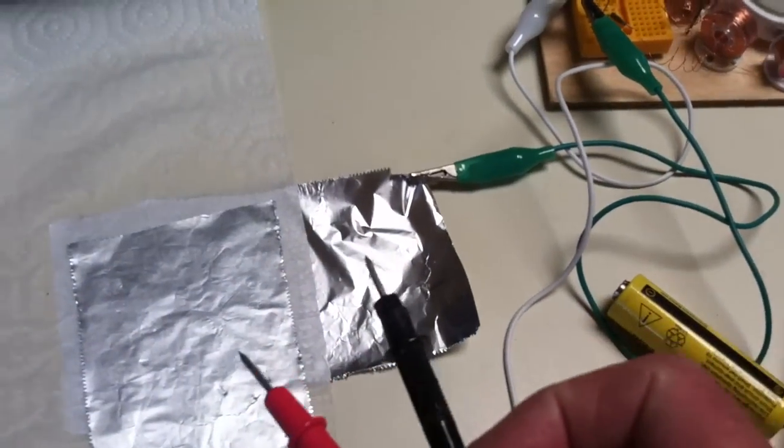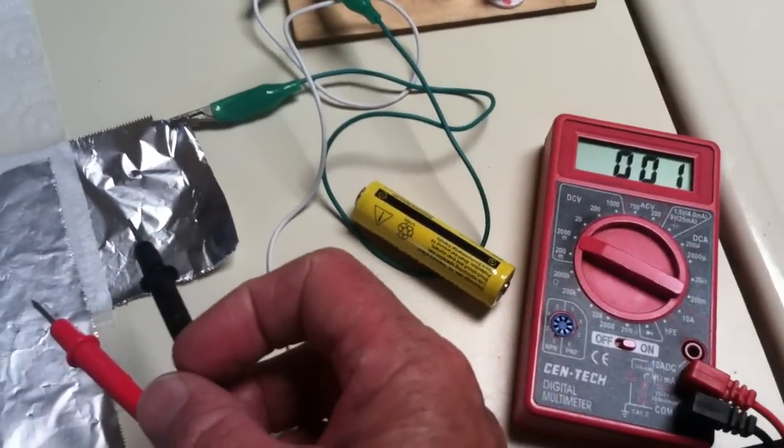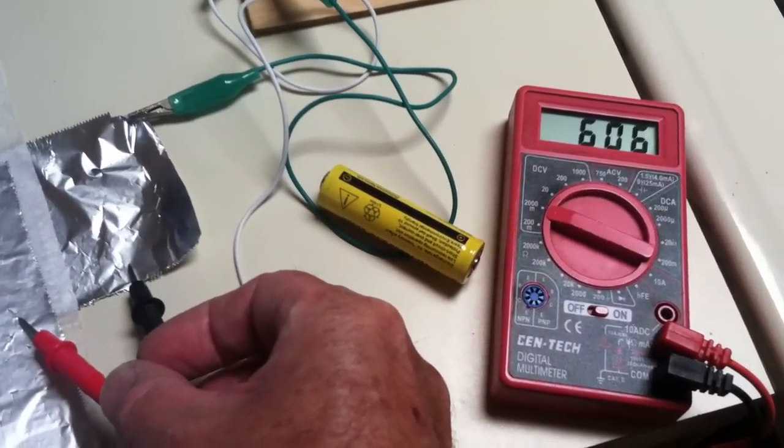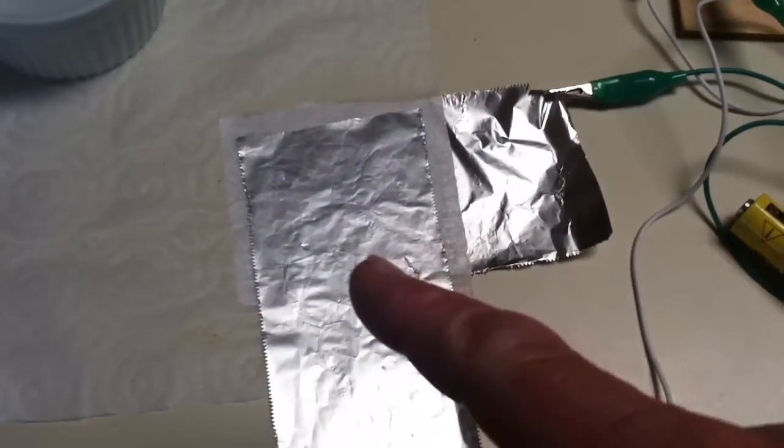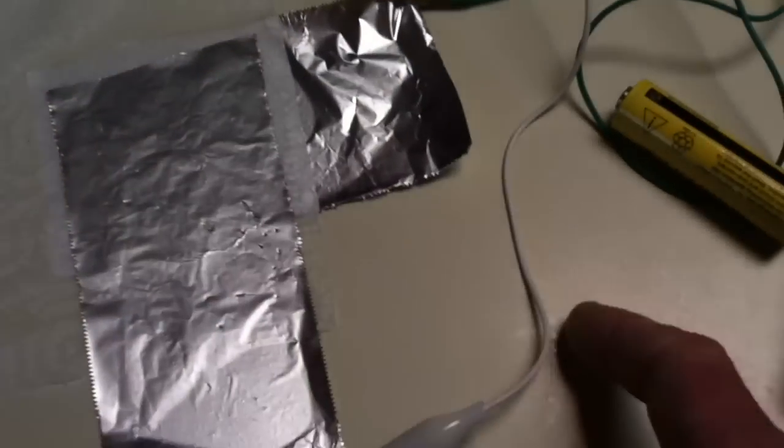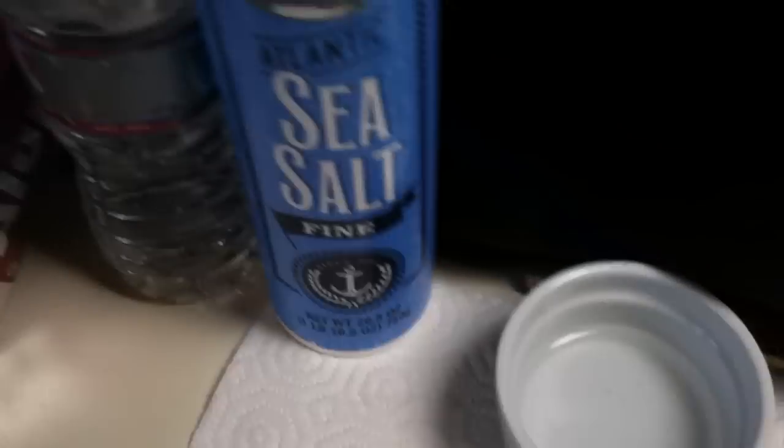This is something I would have never thought you could make something like this, this simple, and get it to form up into a rechargeable cell. Using just aluminum foil, a paper towel, on the kitchen countertop, with these ingredients.